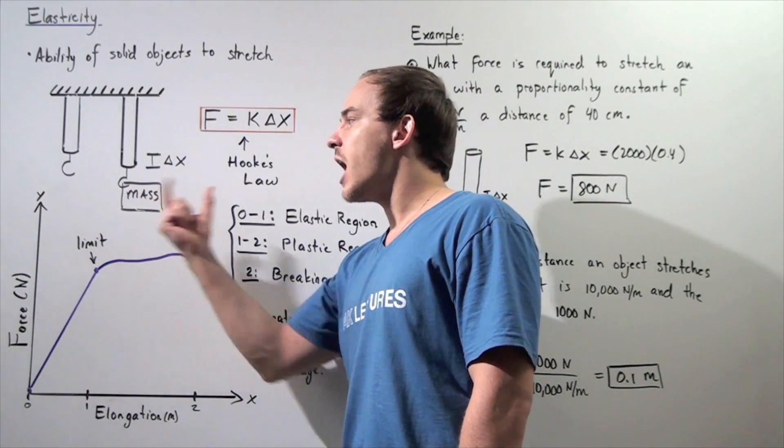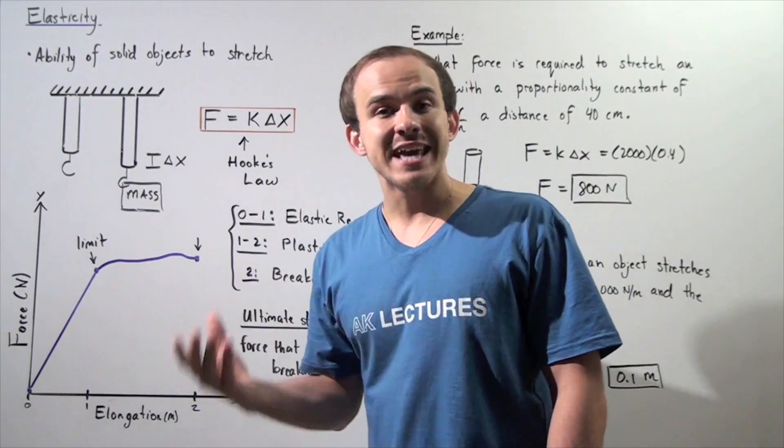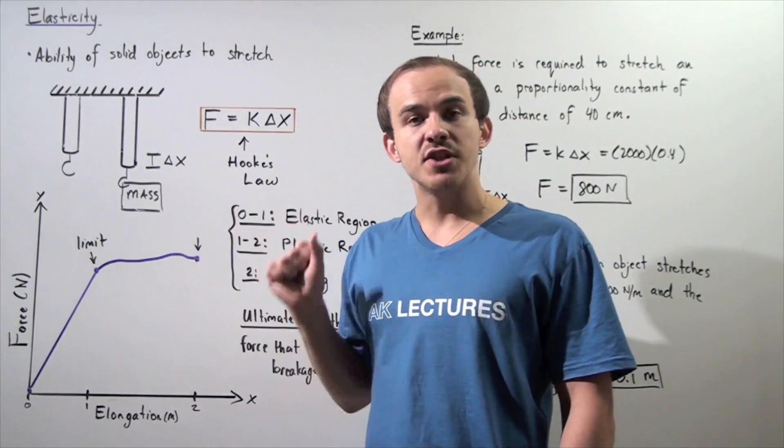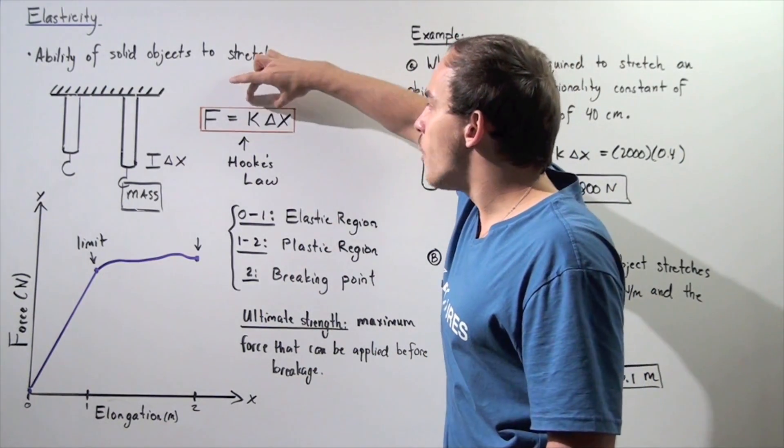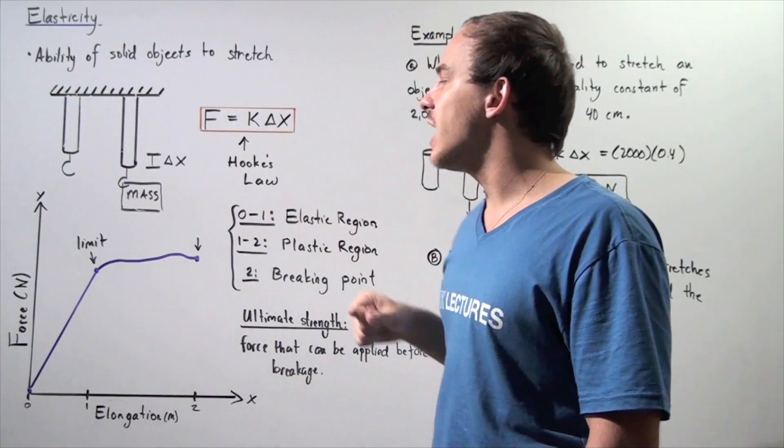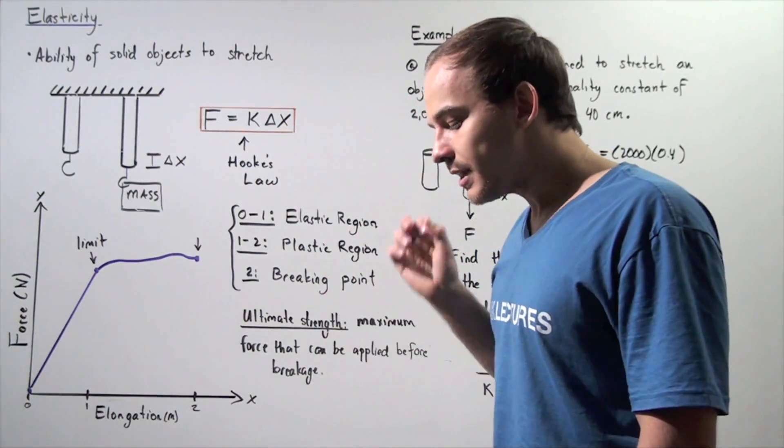So if we want to calculate what the force acting on the object is, and we know what the change in x is, what our elongation is, and we know the proportionality constant K of the object, we can simply multiply these two quantities and we get the force acting on the object, on our solid column.